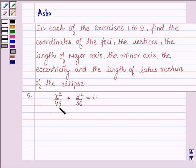The fifth one is x squared upon 49 plus y squared upon 36 equals 1.